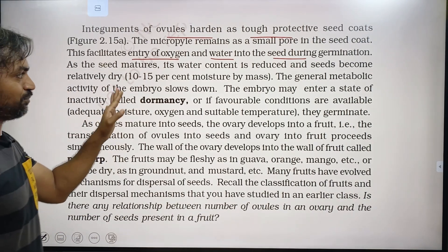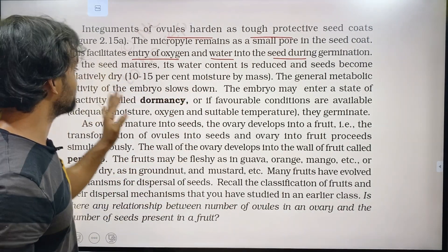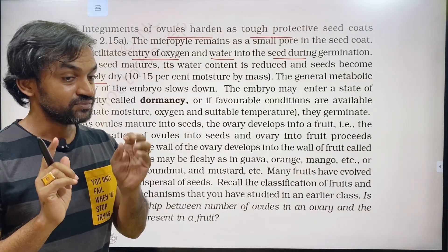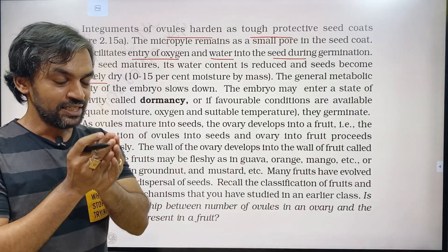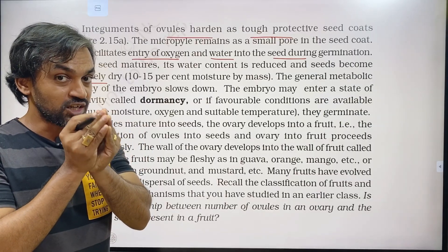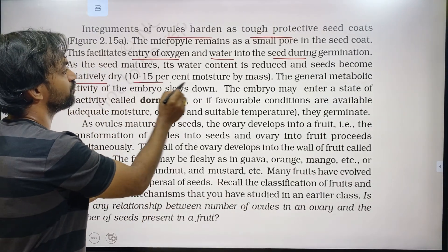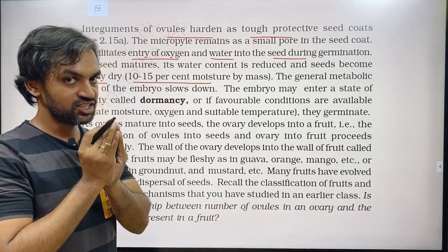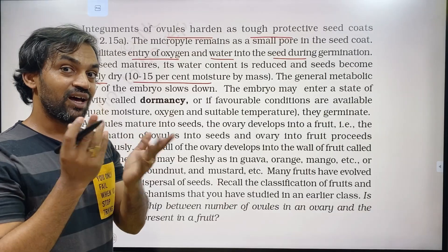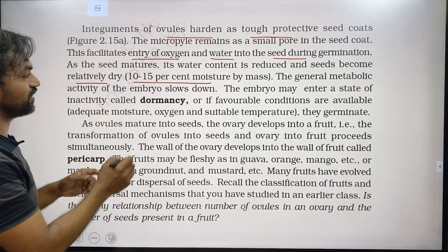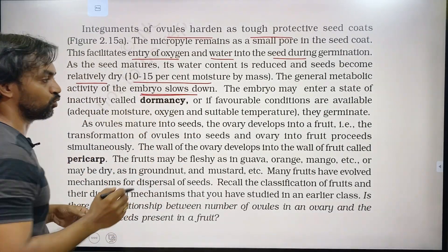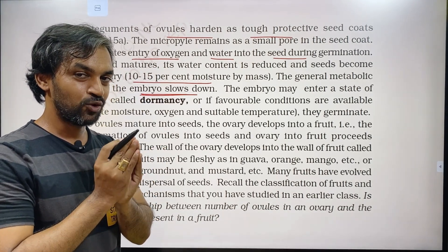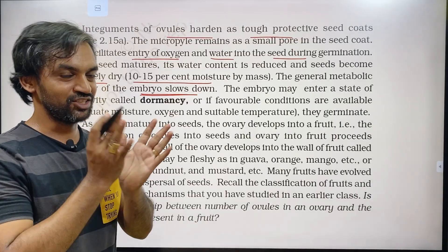As the seed matures, its water content is reduced and the seed becomes relatively dry. The seed matures and the water content drops to about 10–15% moisture. The general metabolic activity of the embryo slows down. The seed requires water, oxygen, and suitable temperature to germinate.